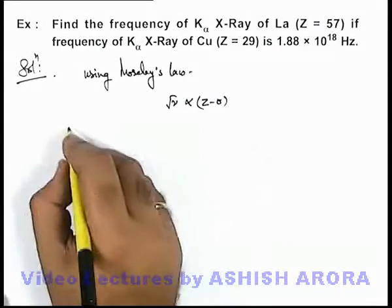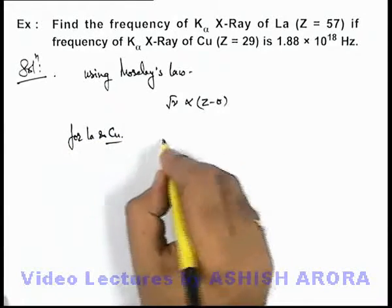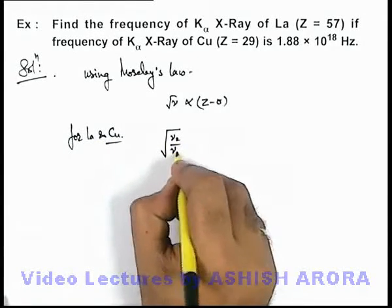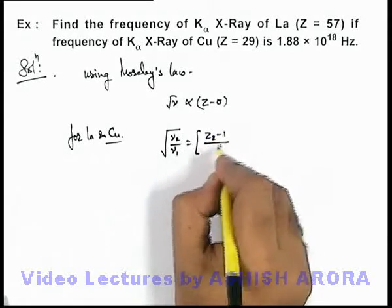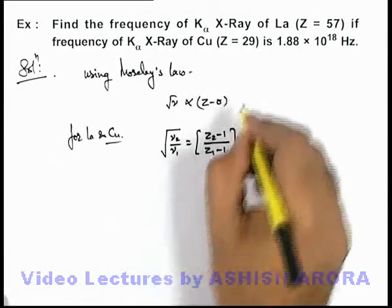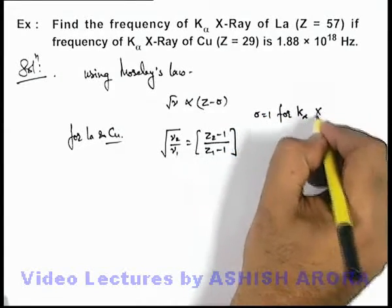So here we can write for lanthanum and copper, root of nu 2 by nu 1 is equal to z 2 minus 1 upon z 1 minus 1. Here value of sigma we can take as 1 for K alpha X-ray.